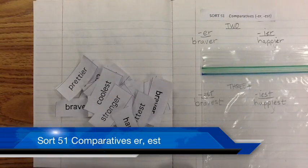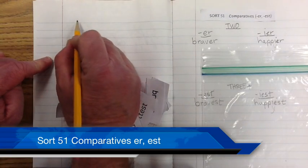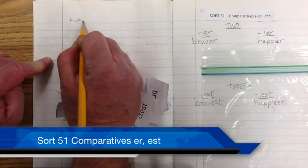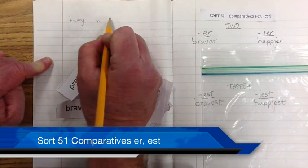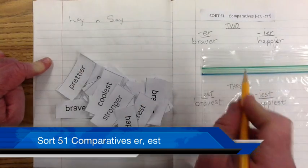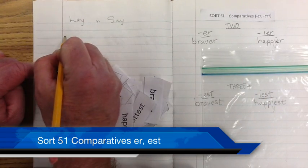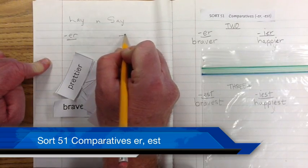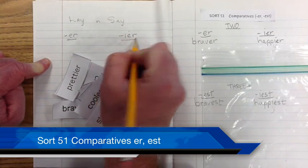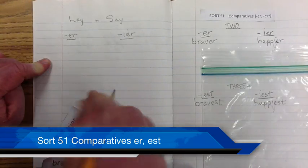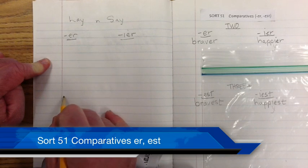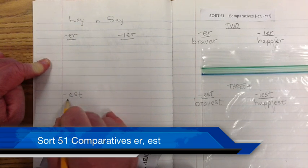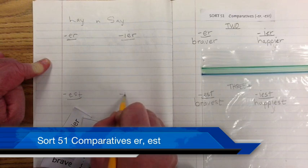Okay. The second part of tonight's homework is I'd like you to do a lay and say. And with the lay and say, you're going to write it as well. And you're going to follow the same format where you have your E-R, your I-E-R, exemplars, and then drop down like we did before.